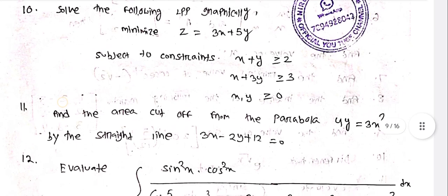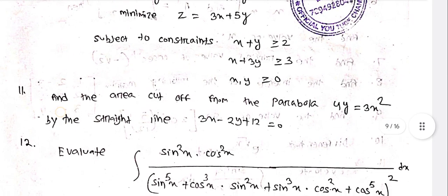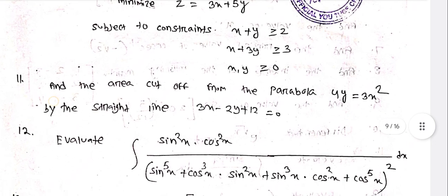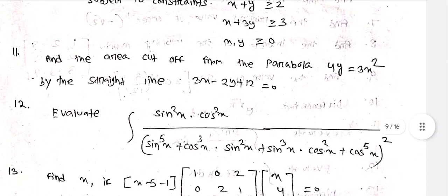Solve the following LPP graphically: minimize z = 3x + 5y subject to constraints x + y ≥ 2, x + 3y ≥ 3, x ≥ 0, y ≥ 0.